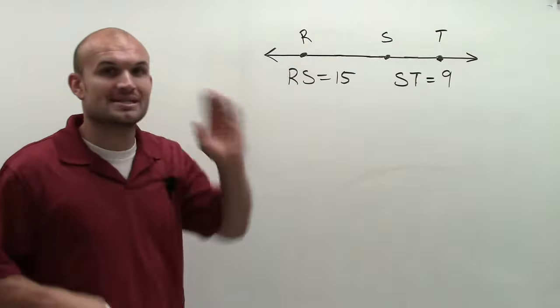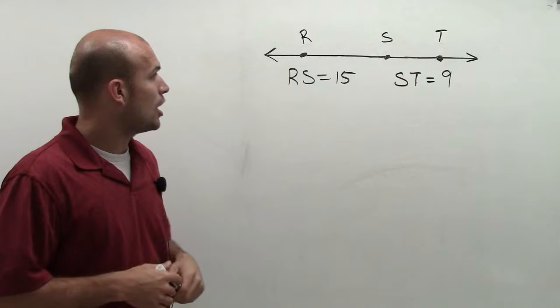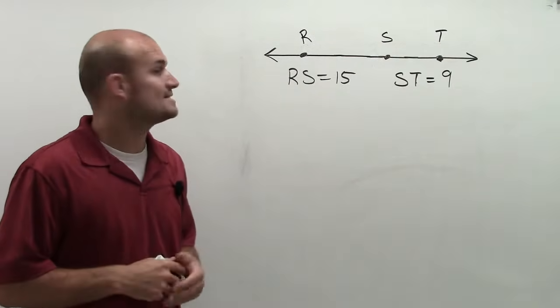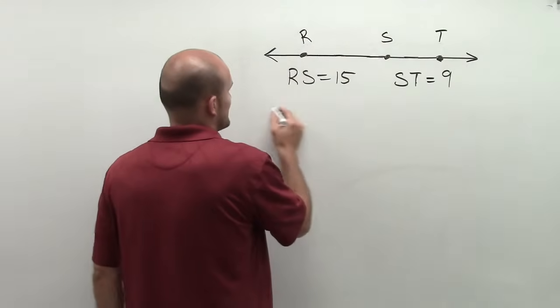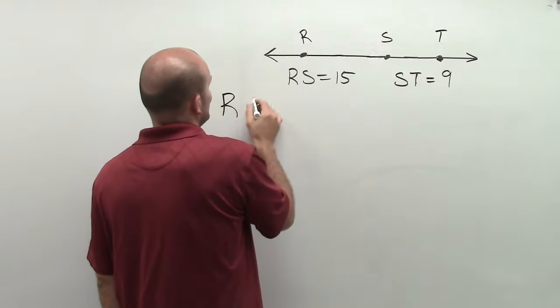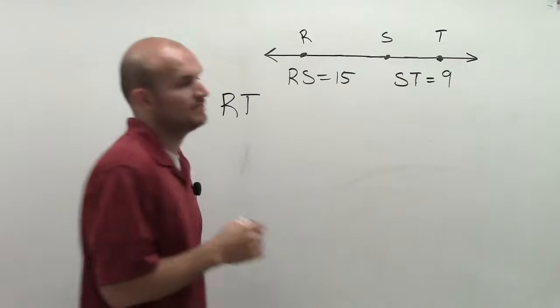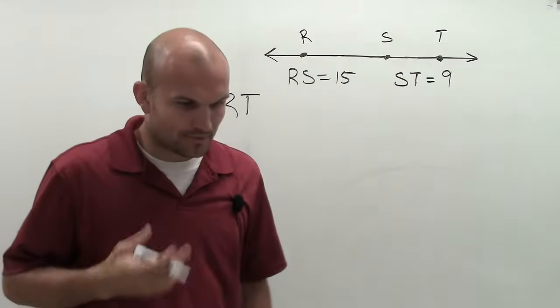And between those points, I have some segments, which are RS, which has the value RS equals 15, and ST, which has the value equal to 9. And what I want to do is figure out what is the value of RT.